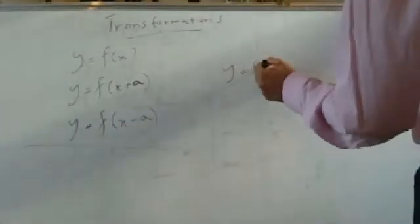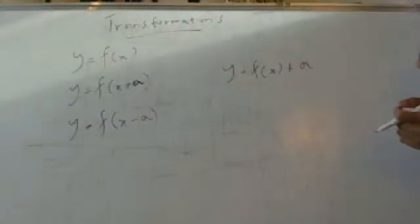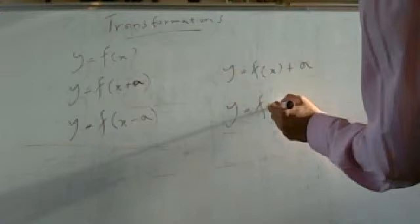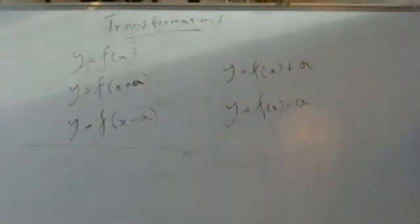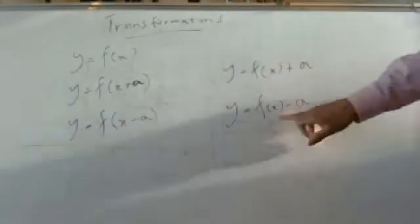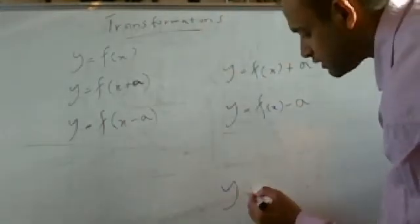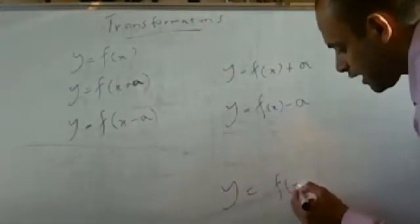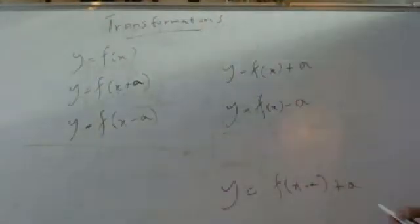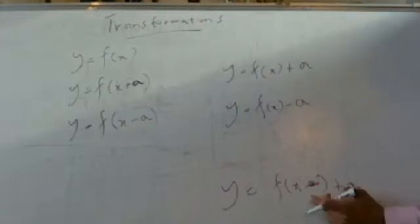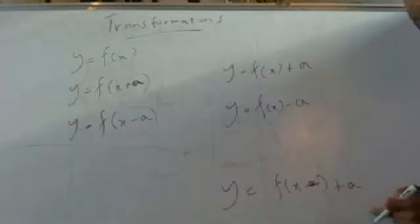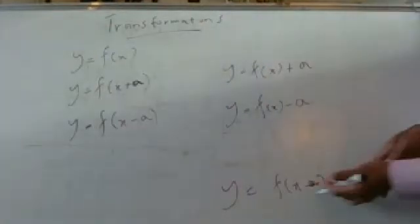Now let's see what happens if we want to move the y-coordinates. So if we have y equals f(x) + a, then all the y-coordinates move up a units, but the x-coordinates don't change. If I do the reverse — f(x) − a — everything is going to go down a units. So if it was f(x) − 2, all the y-coordinates go down 2 units but the x-coordinates aren't changed. If you get something like f(x − a) + a, both sets of coordinates are moving — to the right a units and up a units.